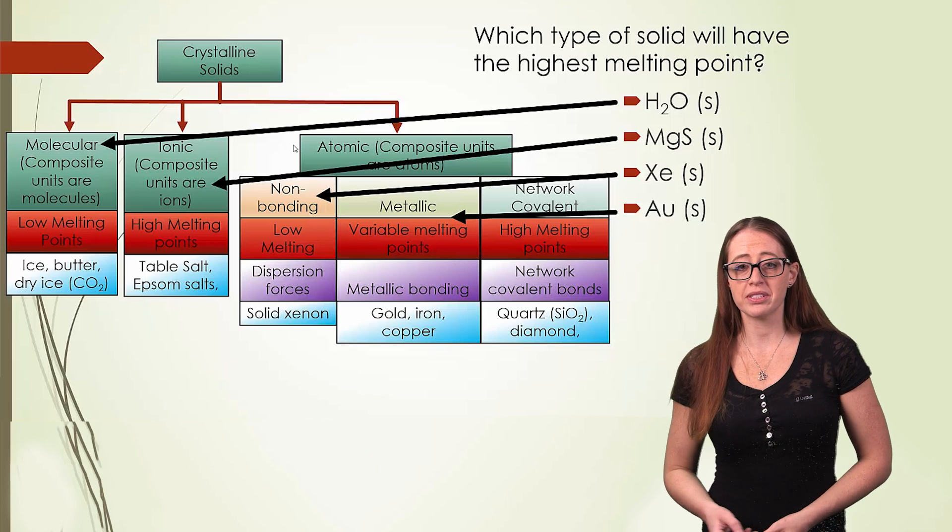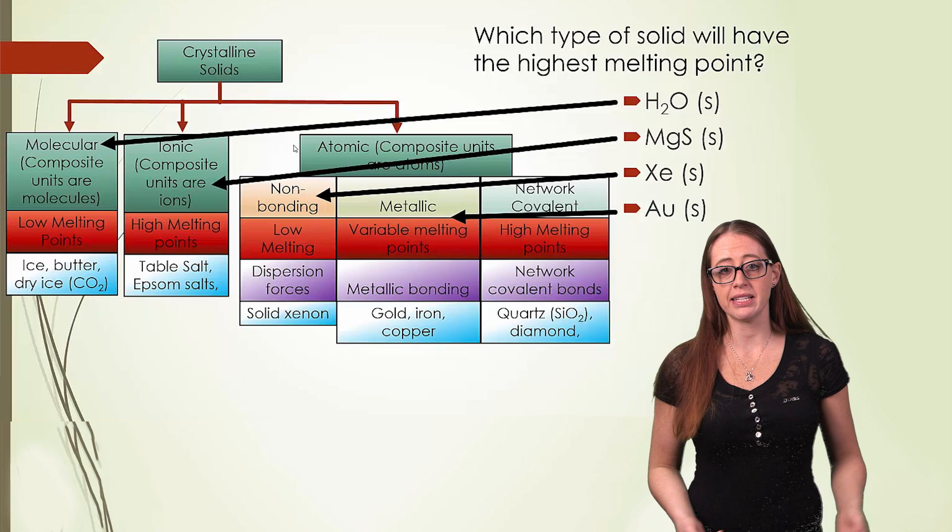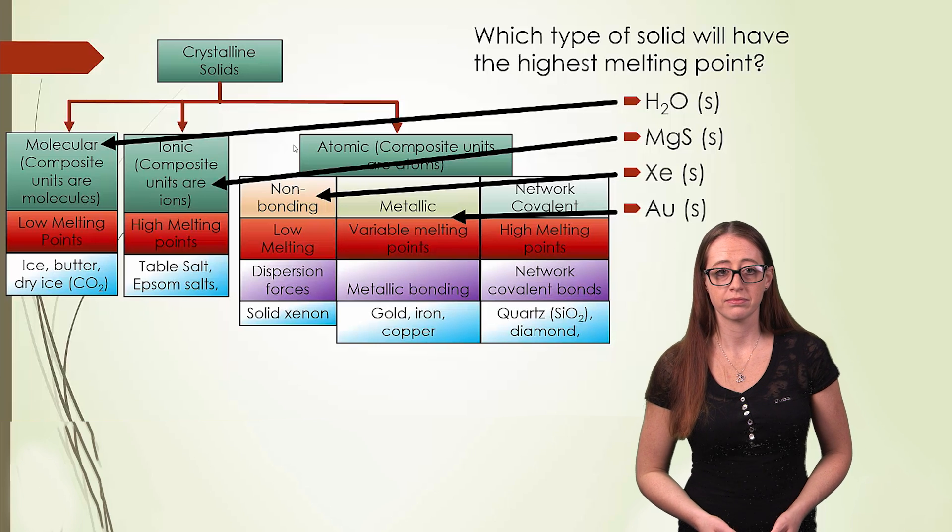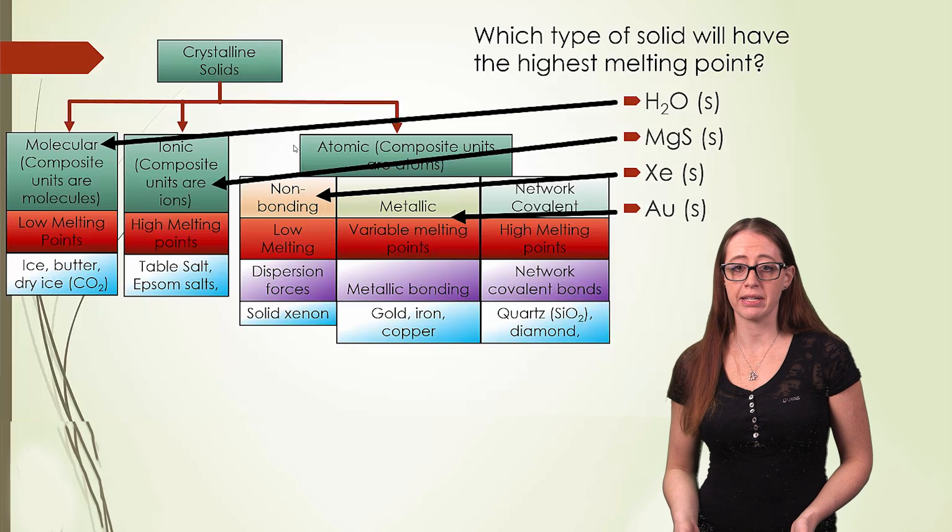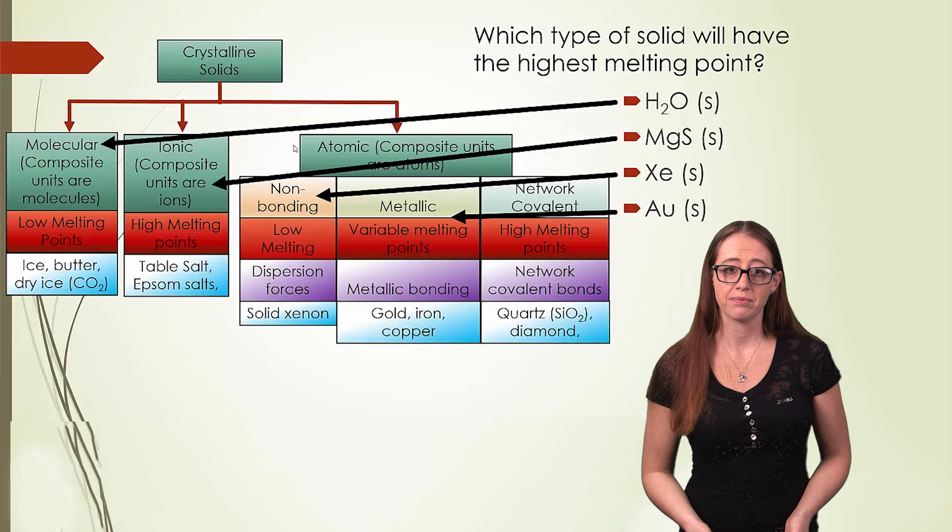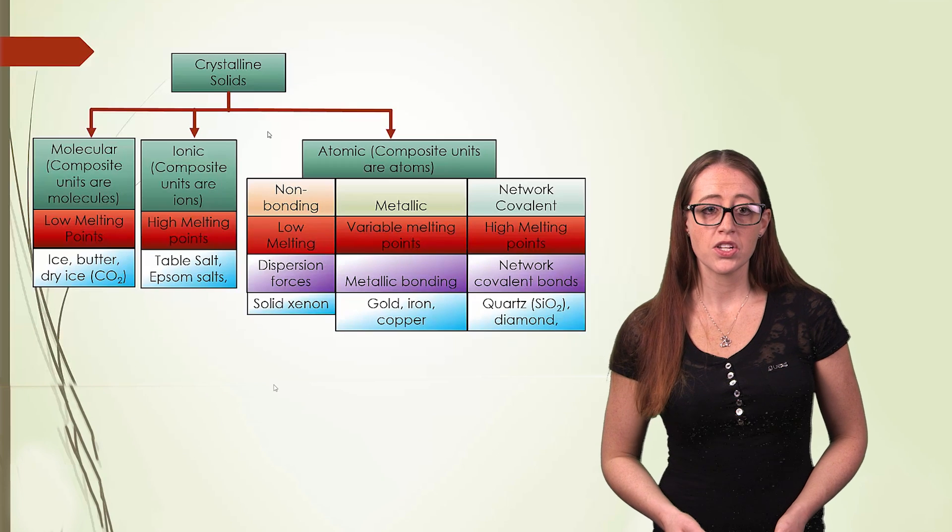We could also say which one is going to be our lowest. And that's perhaps the easier question here. Here, our lowest is going to be our non-bonding atomic species. So that would be xenon.